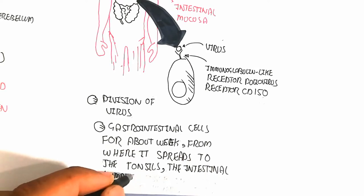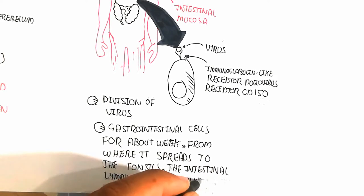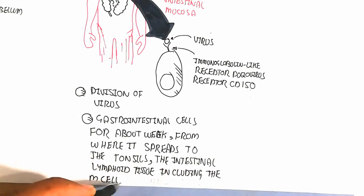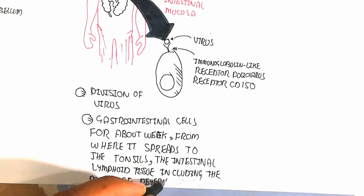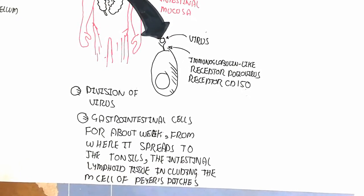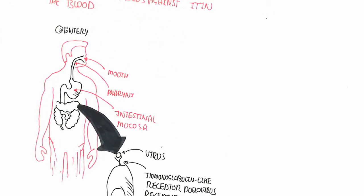This includes the M cells of Peyer's patches. So let's begin to understand the molecular, sorry, the cellular pathway.